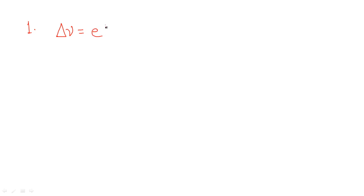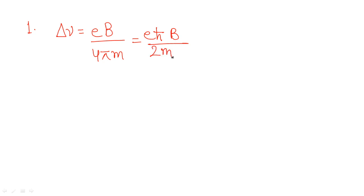The first formula is related to the frequency shift in the Zeeman effect. Think about it or write it down. The expression is: delta nu equals eB upon 4 pi m. You can also write it in terms of other parameters: delta nu equals e h squared B upon 2m h.